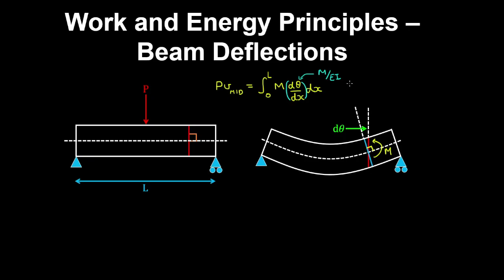So therefore we can write this expression by taking the bending stiffness EI outside the integral, because it is constant, multiplied by the integral from x equals 0 to L, integrating M squared with respect to x.